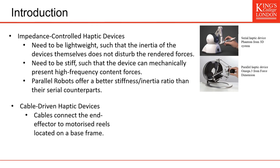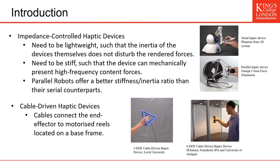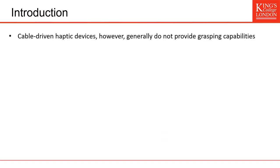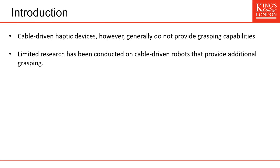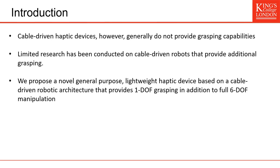Cable-driven haptic device is a type of parallel robot, but in this case the cables connect the end effector to motorized reels located on a base frame and they have been also studied as a potential haptic device. However, cable-driven robots generally do not provide grasping capabilities and there has been limited research that has been conducted on cable robots that can provide additional grasping.